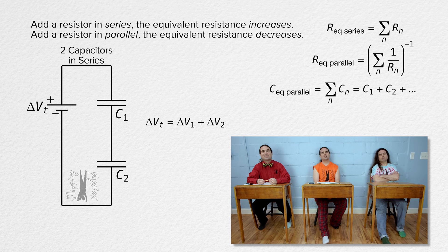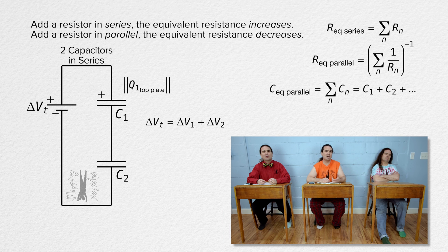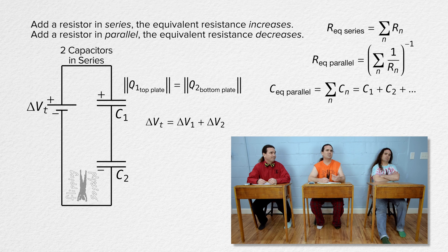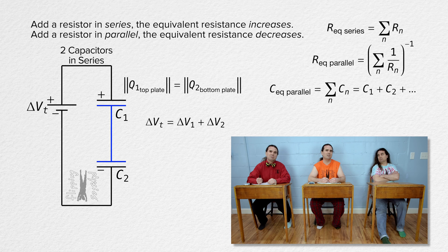Looking at the charges moved by the battery to the plates of the capacitors, we know the magnitude of the charge moved by the battery to the top plate of capacitor 1 and the magnitude of the charge moved to the bottom plate of capacitor 2 are equal in magnitude. But what happens then? How would any charge get on the bottom plate of capacitor 1 and the top plate of capacitor 2? Those two plates are connected by a wire and that whole system is not physically connected to any part of the circuit. There are already electric charges located there on the wire and the two plates of the capacitor.